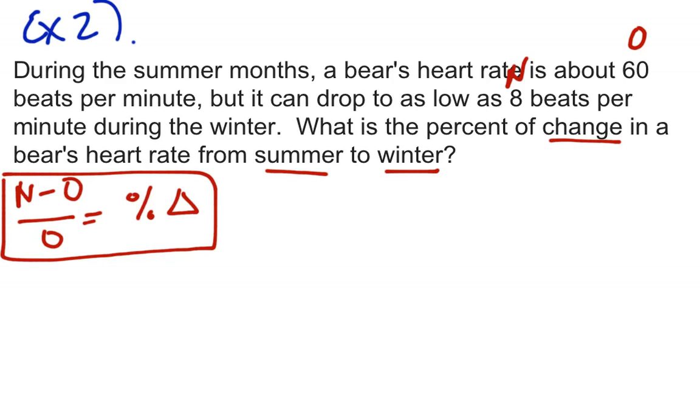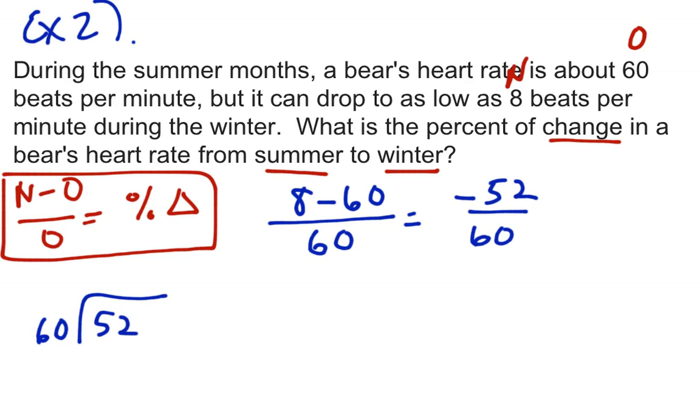So now I can plug the formula in. It's not really a formula. It's a model. So 8 beats subtract 60 beats. And then divide by 60. My original. And when I do that math, I'm going to get a negative 52 over 60. And I can do long division to change that to a decimal because 60 is not going to go into 100 very nicely. So it's hard for me to change it into 100 and make a percent out of it. I'm trying to get percent. So I'm going to use long division and change that into a decimal. And when I do that, I'm going to get 0.86 repeating.